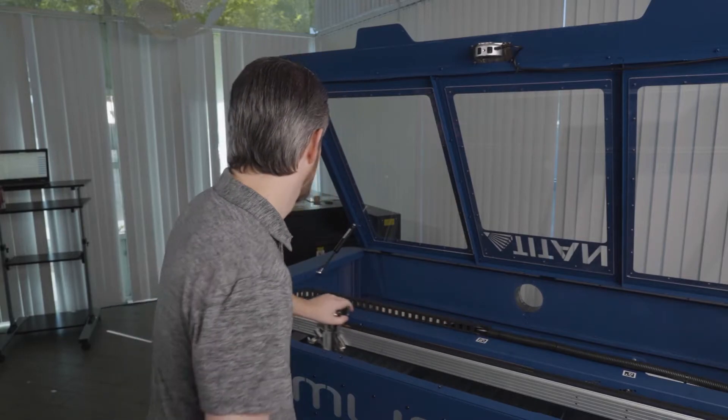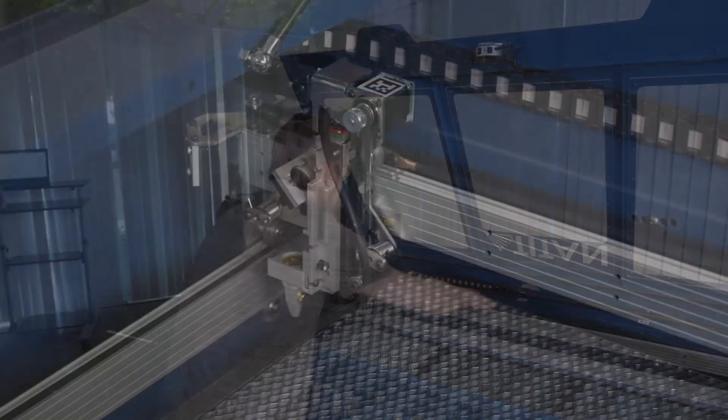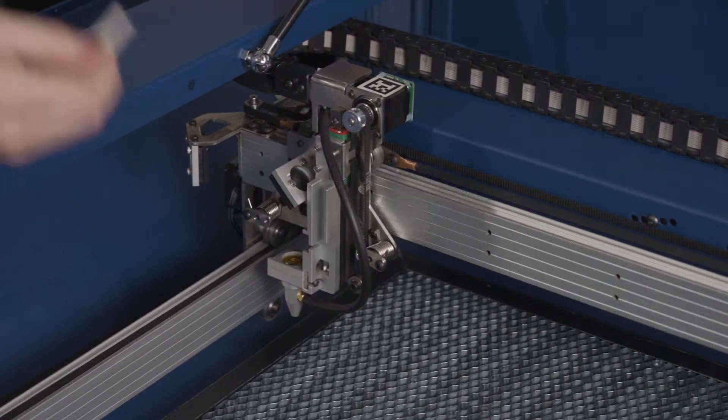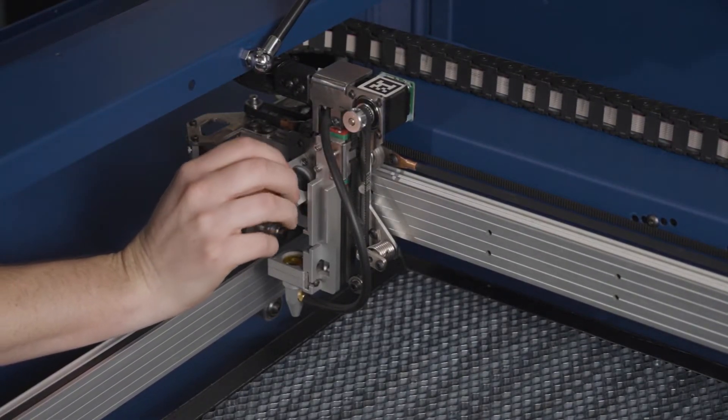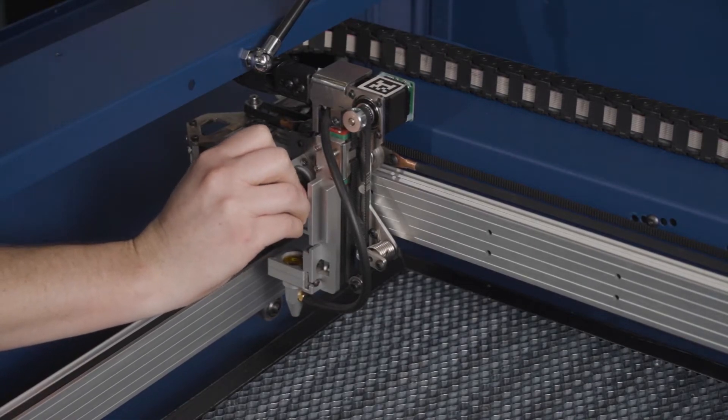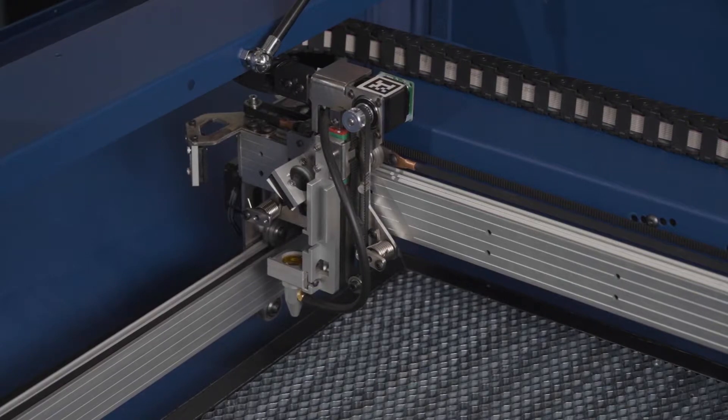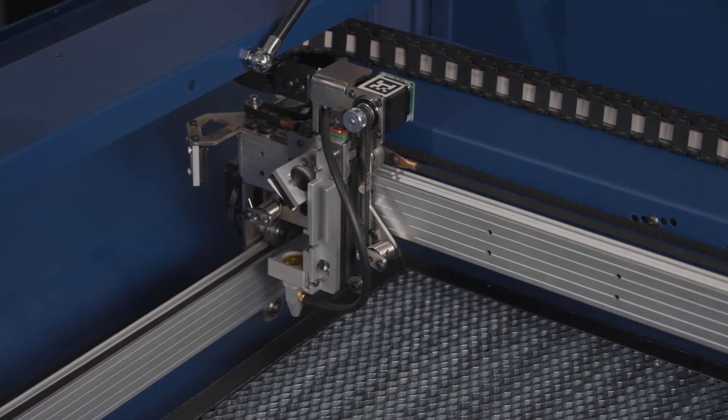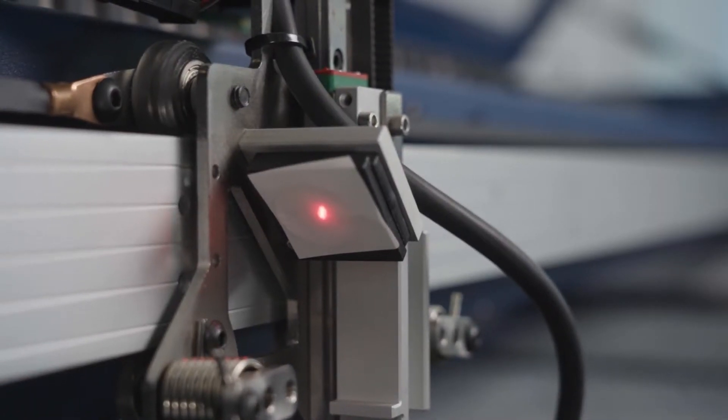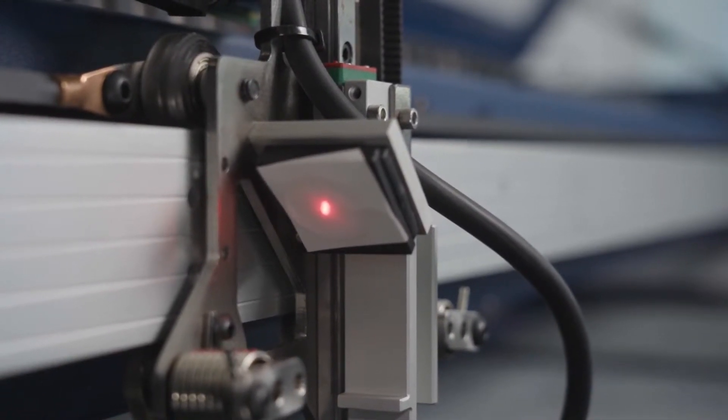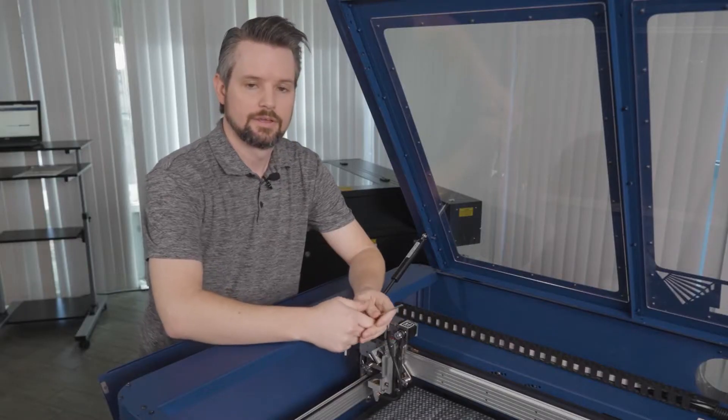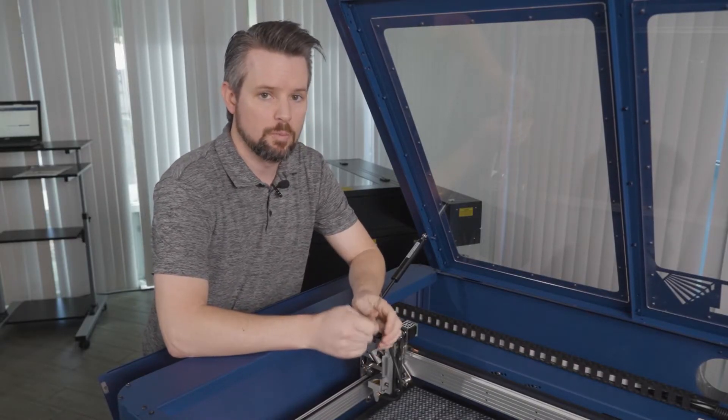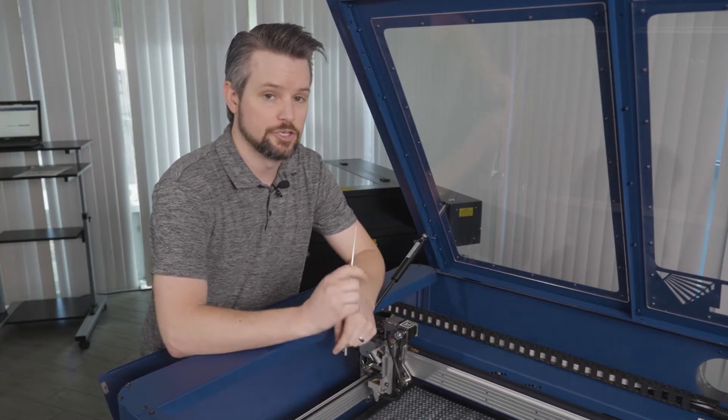Now that the red diode and the CO2 laser are aligned to the same spot, we're going to align the laser across the gantry. To start this, we're going to move the laser head to the back left corner of the machine. We're going to start by placing a piece of thermal paper on mirror three, and then adjust only mirror one to make sure the red dot lands in the center of mirror three. After you've verified that it is centered in the middle of mirror three, do a test fire to make sure it matches. If the red diode and the test fire don't match up, go back to the beginning of the previous step and do it over again. If they do match up, let's move on.